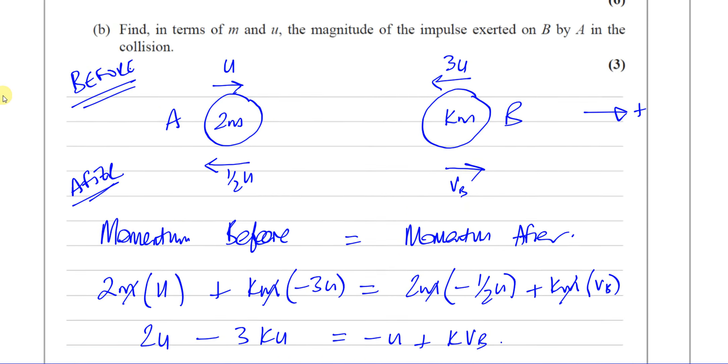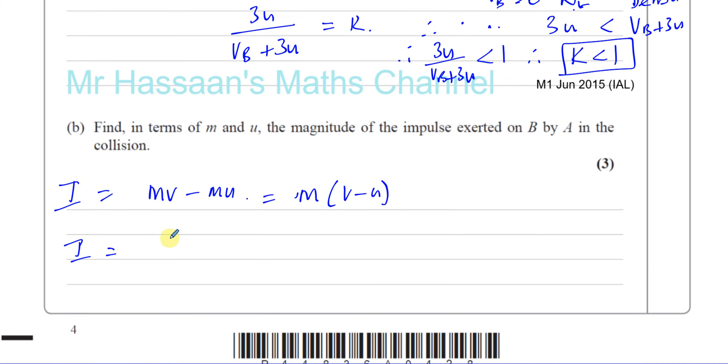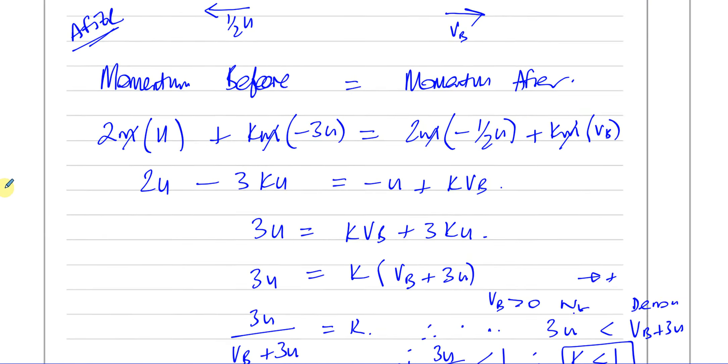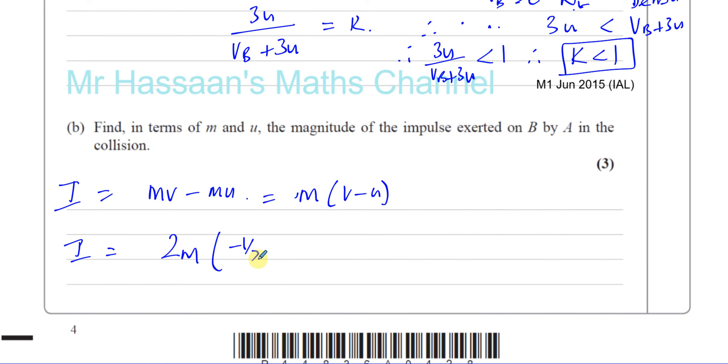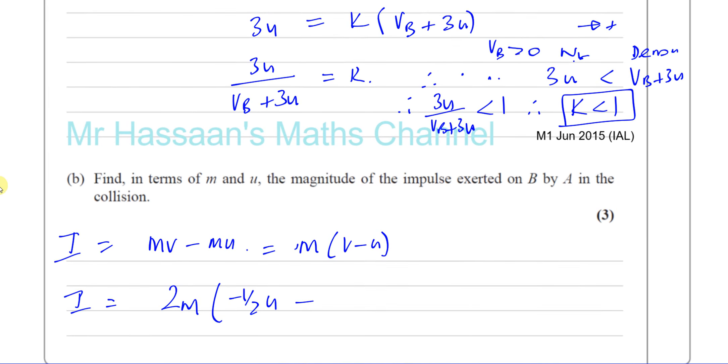Its final velocity is minus a half U. And its initial velocity is U.